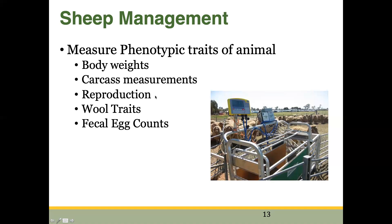We also measure reproductive traits — things like type of birth and type of rearing: was it born a twin, raised a twin, born a triplet or a single. If wool traits are important to your operation we'll measure wool traits — things like grease fleece weight, staple length, and fiber diameter. One that we're really focusing on in these workshops is fecal egg counts, or how resistant these animals are to internal parasites.